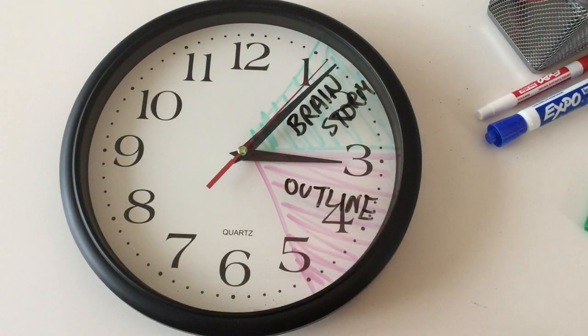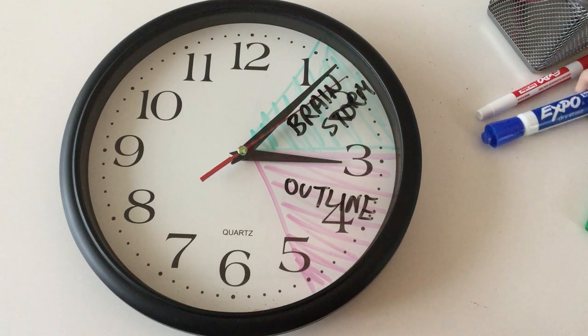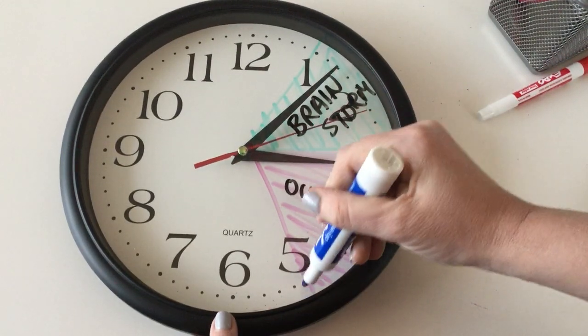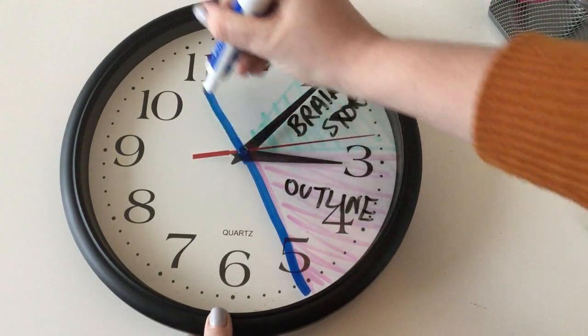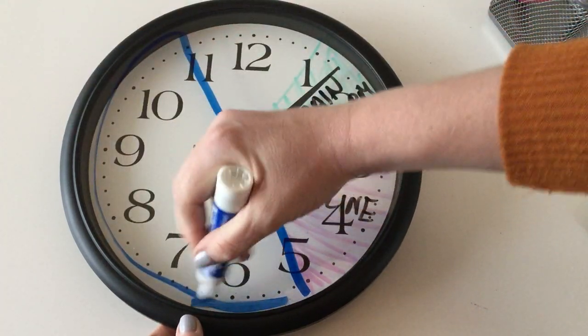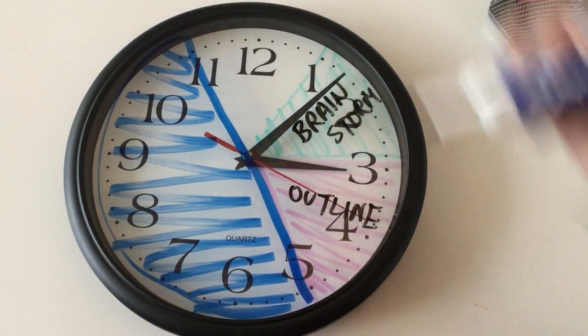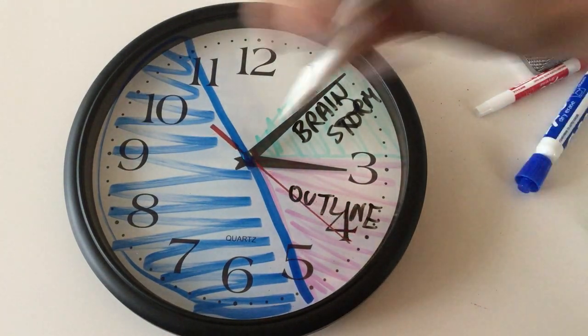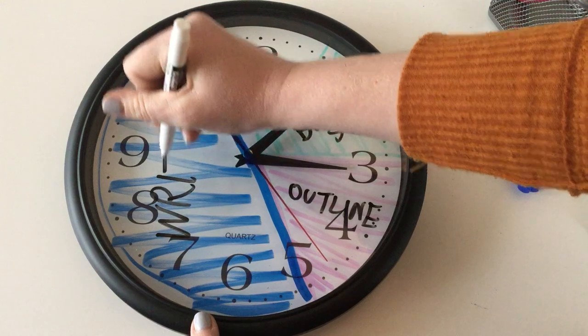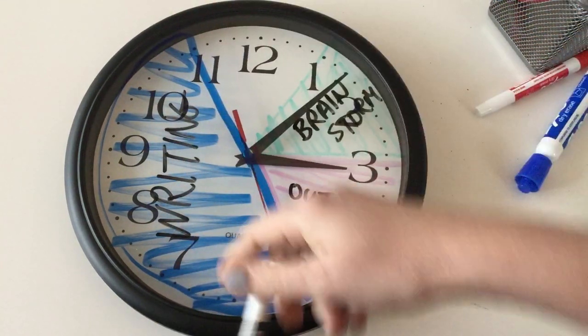I'm going to take from 3:25 all the way until 3:55—this whole half hour—this is going to be writing. I want to spend a good chunk on writing. If you had lighter colors it'd be easier to show. You don't even necessarily have to color it in.